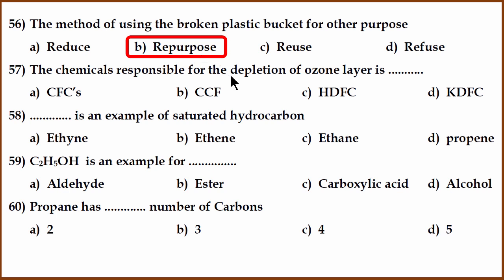What is responsible for depletion of ozone layer? It is chlorofluorocarbon, CFC. Example of saturated hydrocarbon - it is ethane. Ethene, ethyne and propene have double bond or triple bond, they are unsaturated. Ethane is the only one which has only single bond. So therefore, it is the correct answer.